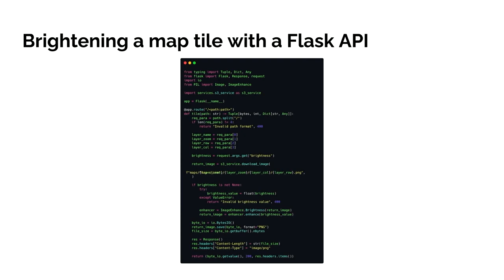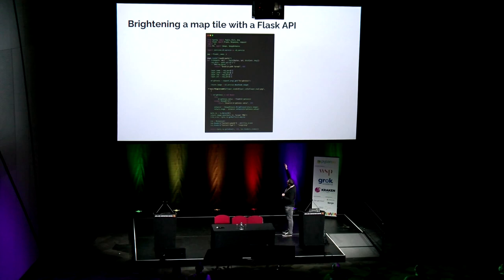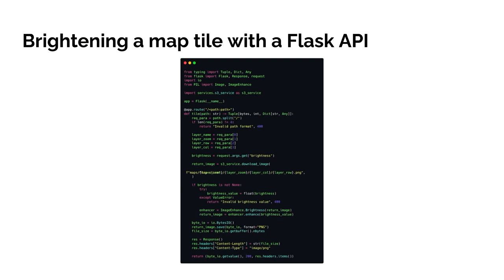This is a very simple example of the API endpoint we just used. I restricted it to show you the way it brightens the data. You can see that we're retrieving those parameters — the layer name, the zoom, the row, the column — so we can locate that tile. Then after we get that imagery back from the S3 service, we apply the brightness filter directly to that data, enhance it, and return it directly back in the byte stream.